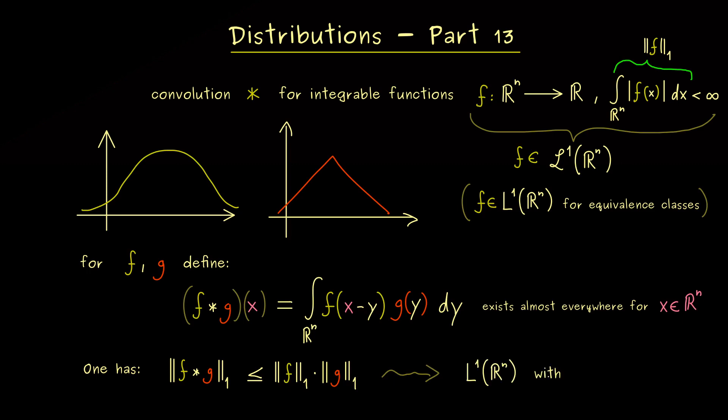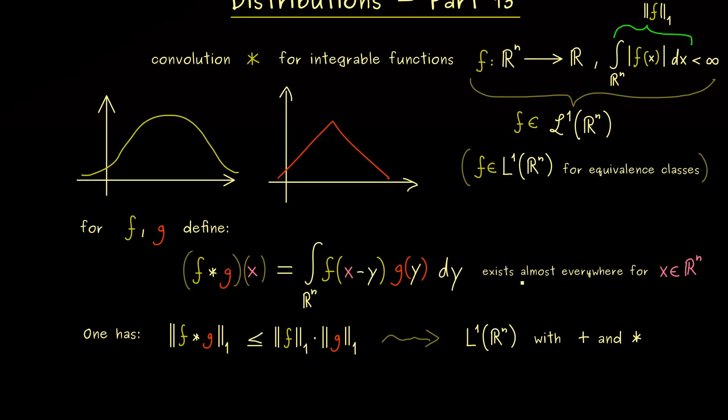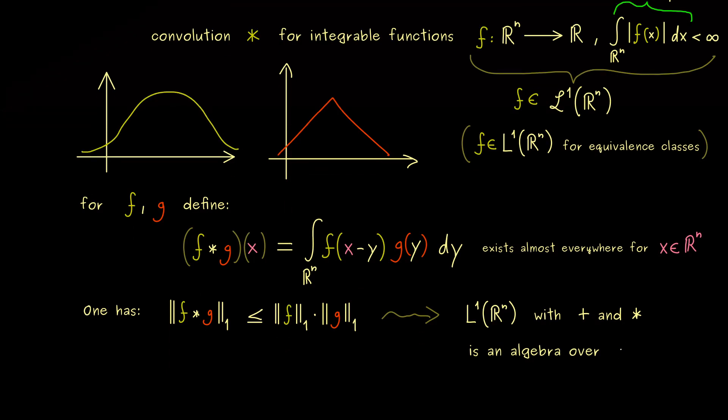So we see this star operation acts like a multiplication in our L¹ space. This means in L¹ we now have an addition and a multiplication. And together with these two operations, the space L¹ becomes an algebra over the field of the real numbers. So for example, this implies that we have a distributive rule for calculations. However, I don't want to go into the details here. But actually, we want to extend the convolution for distributions now.